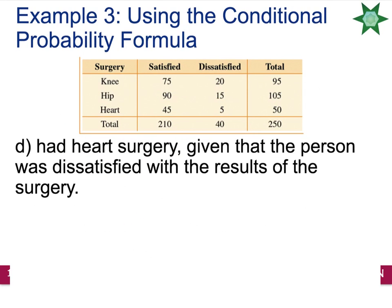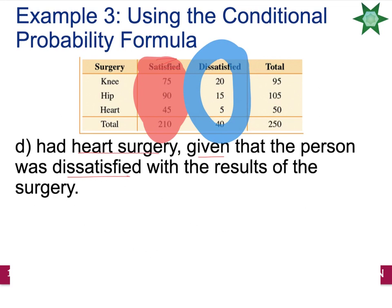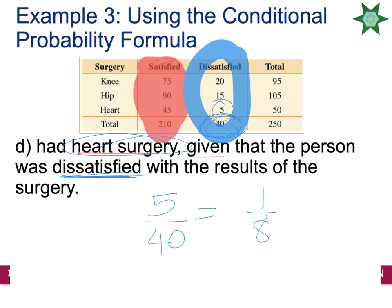Last one: if you selected one random person, what is the probability that they had heart surgery given that they were dissatisfied? In this situation, you knock out anybody who was satisfied — we focus on the dissatisfied group because we know this person was dissatisfied. Given that they were dissatisfied, there were 40 clients total who were dissatisfied. What is the probability that the person selected from that dissatisfied category had heart surgery? There are 5 out of 40 that had heart surgery. Reduce the fraction: 1 out of 8 dissatisfied patients were heart surgery patients.